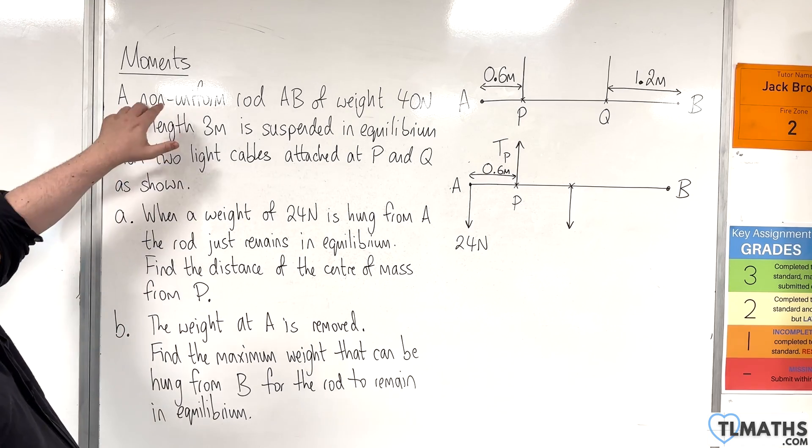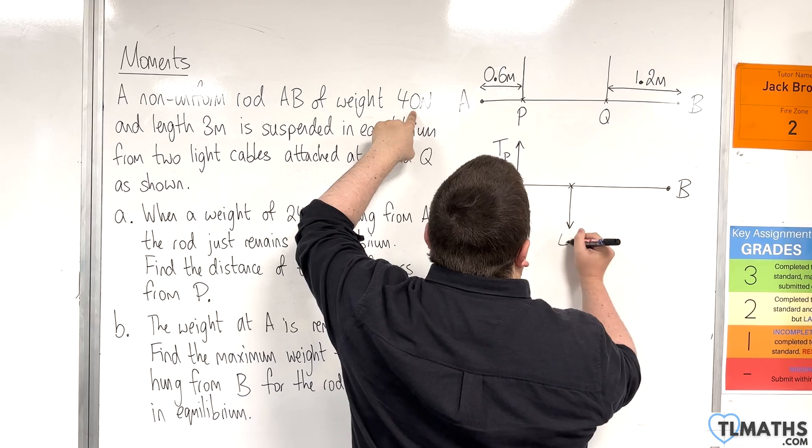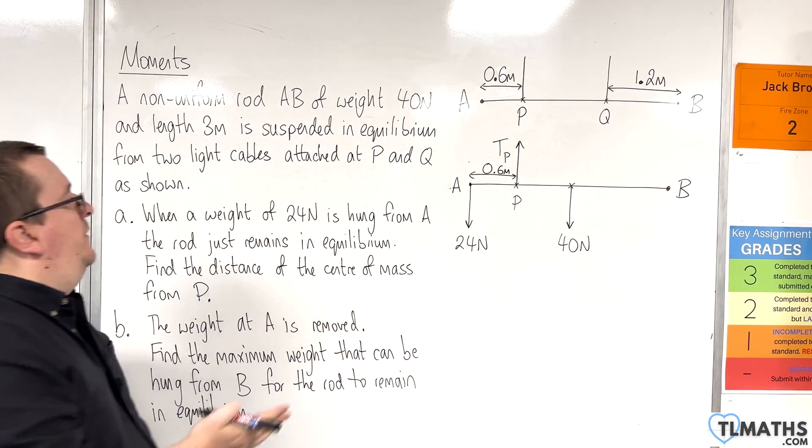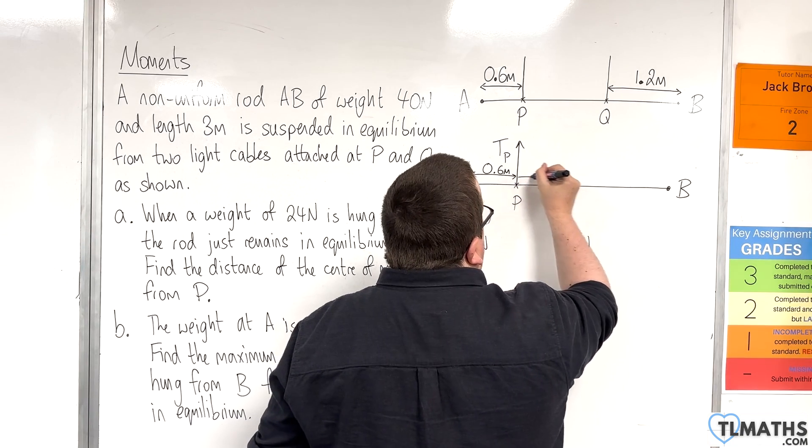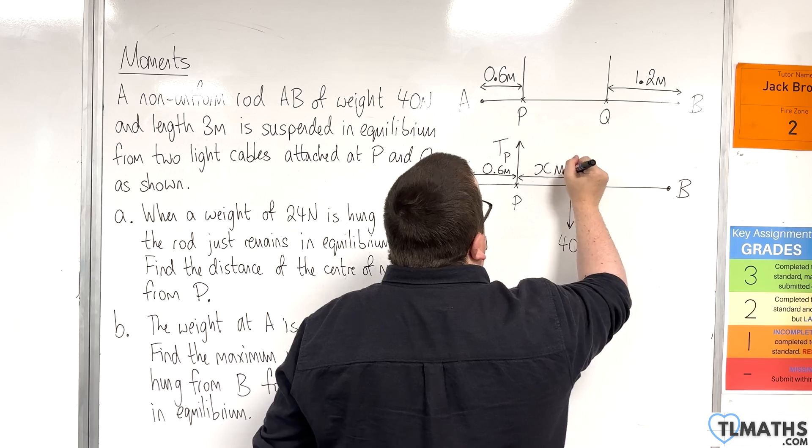So this is the centre of mass of the rod. We don't know where it is because it's non-uniform. We know that its weight is 40 newtons. And we are interested in the distance of the centre of mass from P. So we're interested in this distance here. So let's call this X metres.